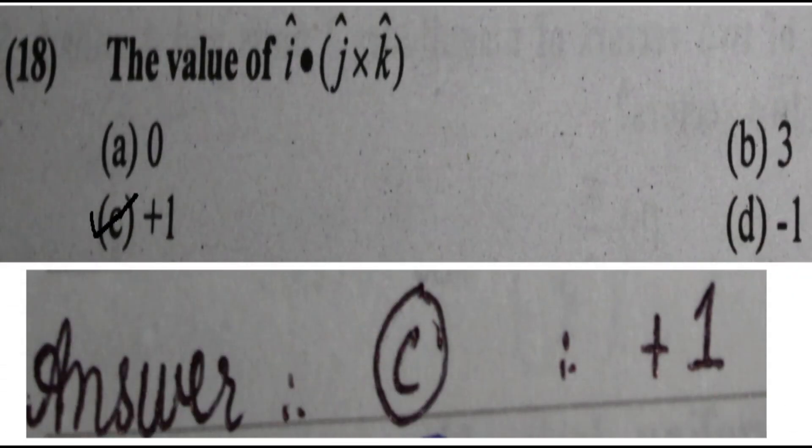Next question: the value of i·(j × k) is a standard result that you should remember — it is always equal to positive 1. So option C is the correct answer.